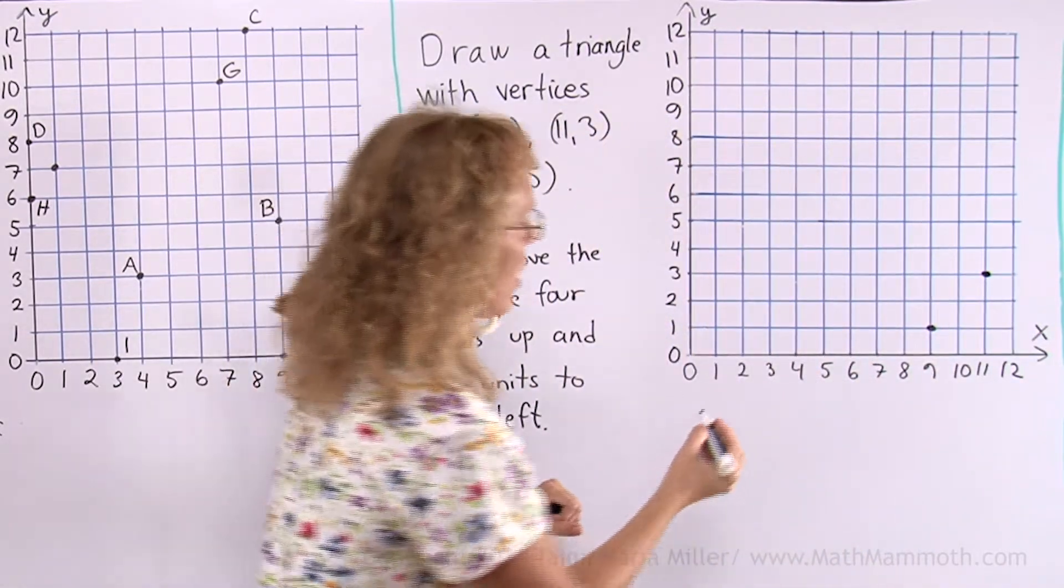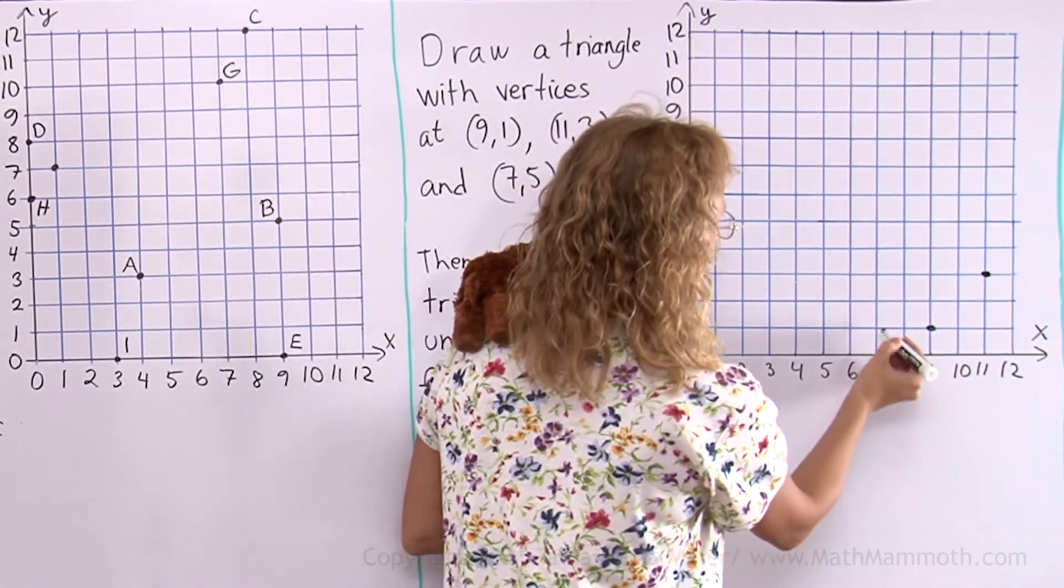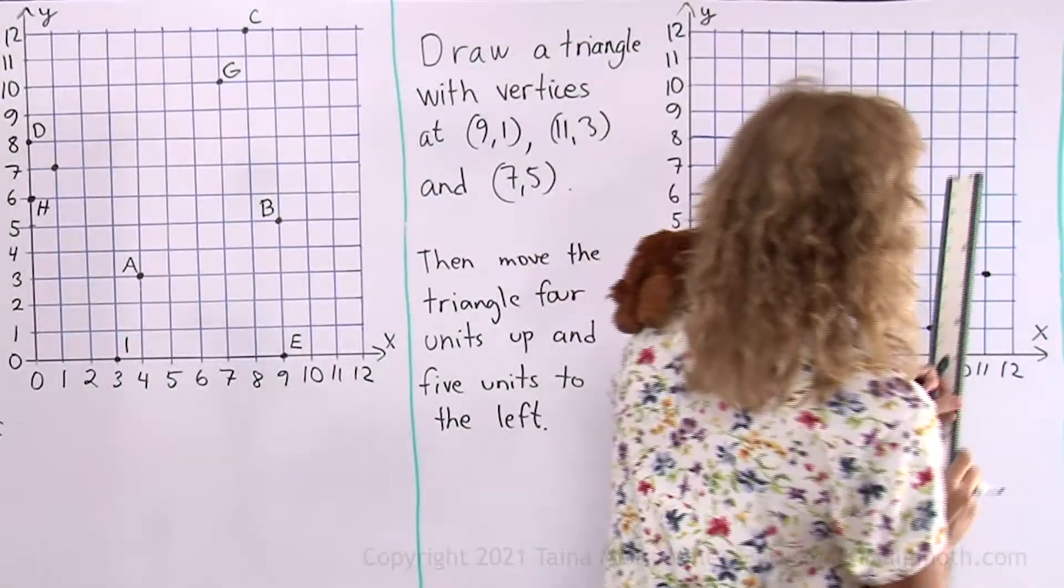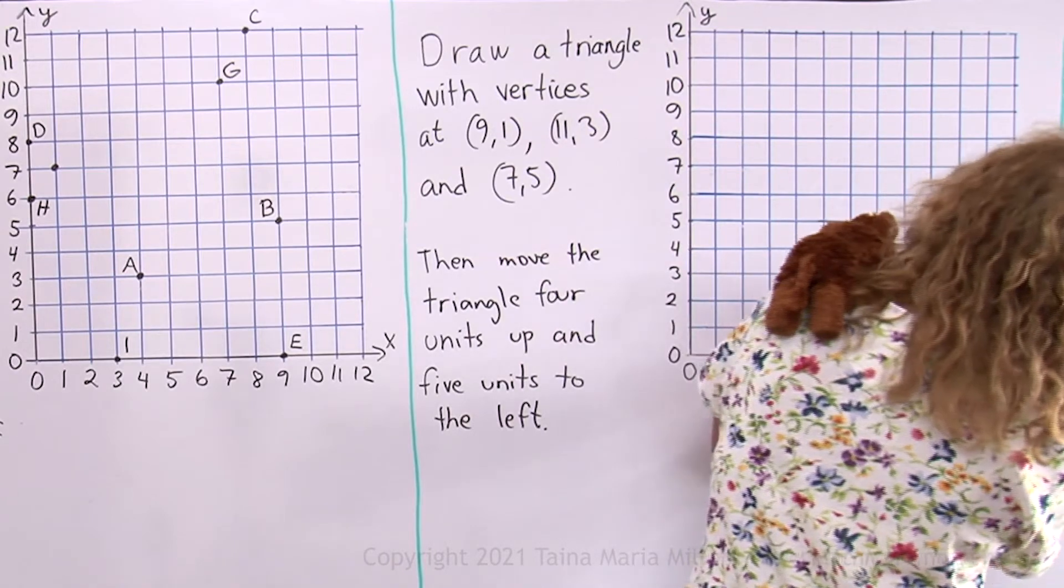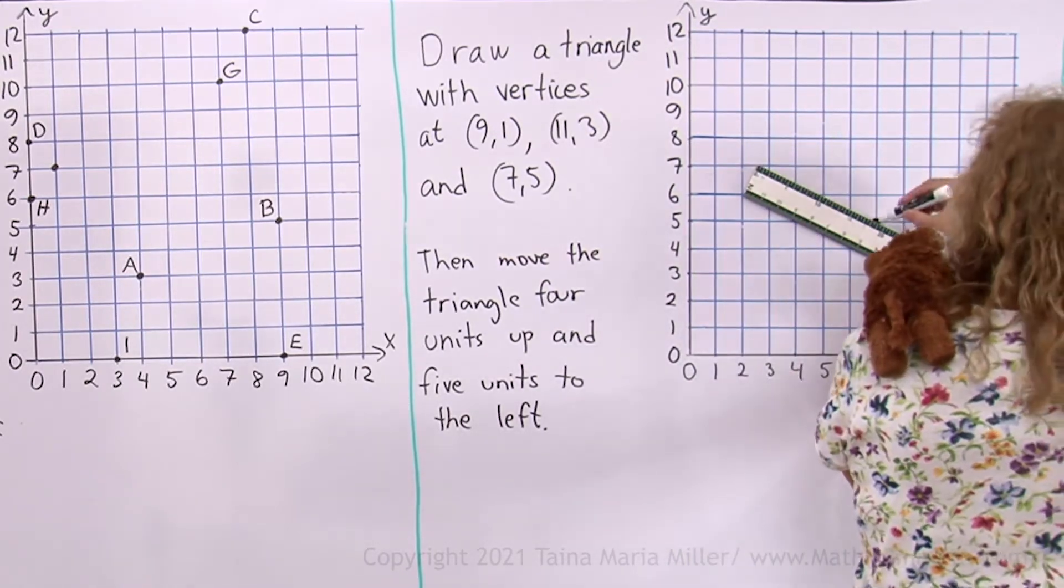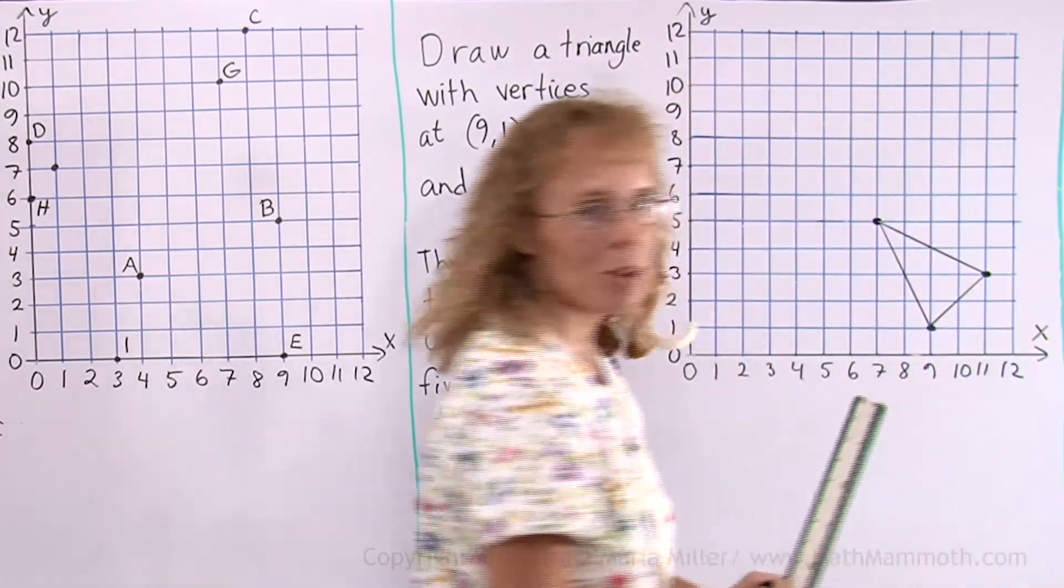And lastly 7, 5. Go to 7 here, and then 5 up. There. Now we'll need a ruler. I'll connect this with a ruler. There's my triangle.